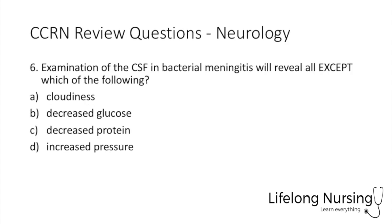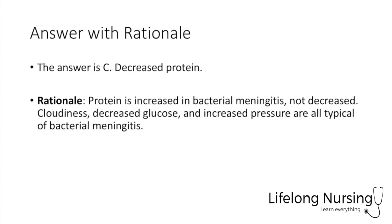Question number 6. Examination of the cerebrospinal fluid in bacterial meningitis will reveal all of the following except: cloudiness, decreased glucose, decreased protein, or increased pressure. The answer is C, decreased protein. Protein is actually increased during bacterial meningitis, not decreased. Cloudiness, decreased glucose, and increased pressure are all typical findings of bacterial meningitis.